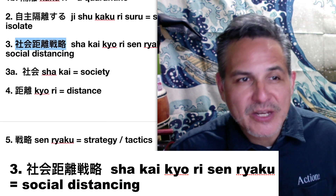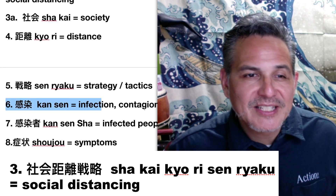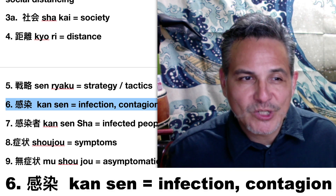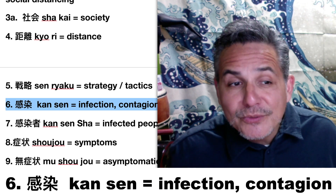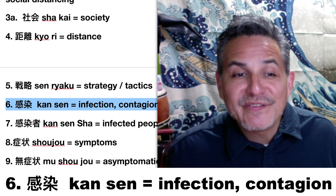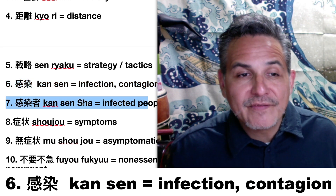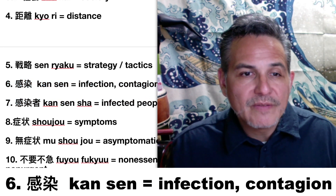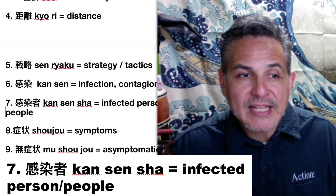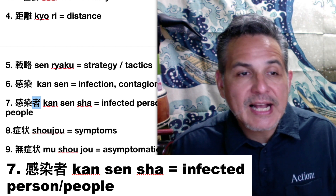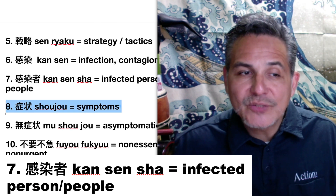Number six: infection or contagion is kansen. It can also be a verb — kansen suru — meaning to infect someone. The noun is kansen, and an infected person or infected people would be kansen sha. That last kanji means person.